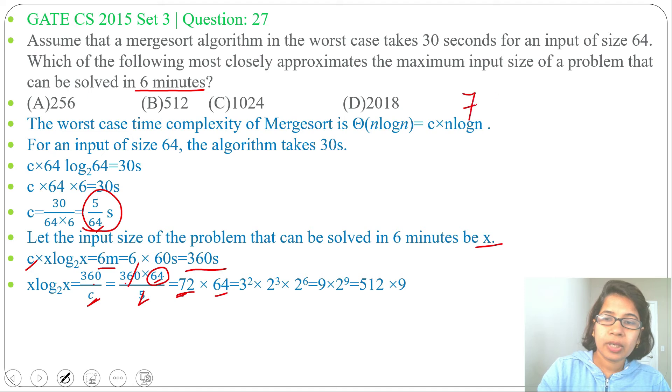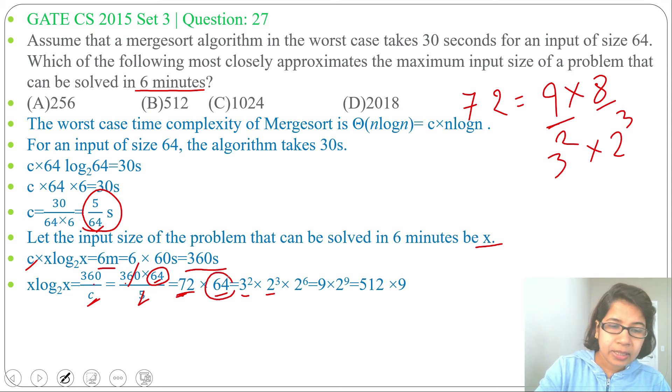72 we can write as 9 × 8. This 9 we can write as 3², and this 8 we can write as 2³. So in place of 72 we can write as 2³, and this 64 we can write as 2⁶.